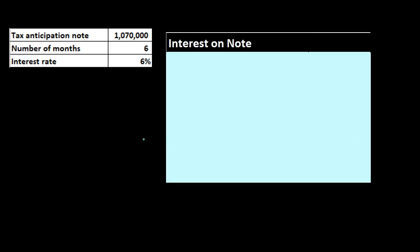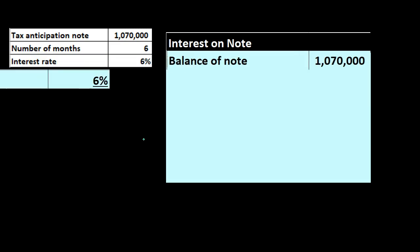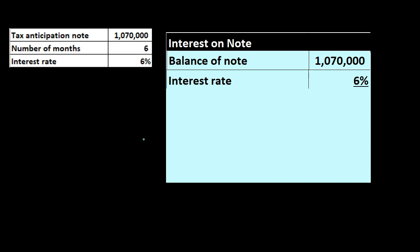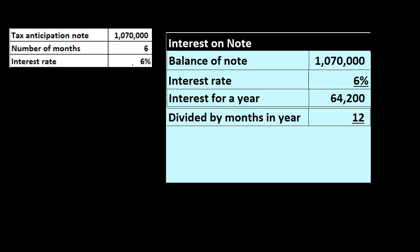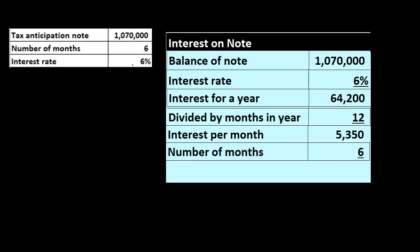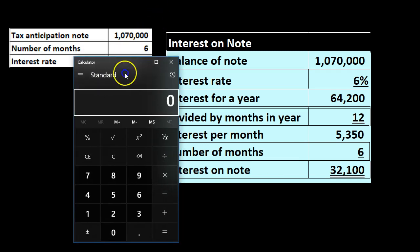Then of course we'll calculate the interest on this — the same kind of calculation we would have on a standard note. Here's the balance of the note; we'll multiply it times six percent. Remember, anytime we have an interest rate of six percent, unless specified otherwise, that means per year. So multiplying times six percent gives us $64,200 per year. We want to get it down to six months, so we divide by 12 to get a monthly amount, then multiply times six months, which gives us the interest we'll have to record.